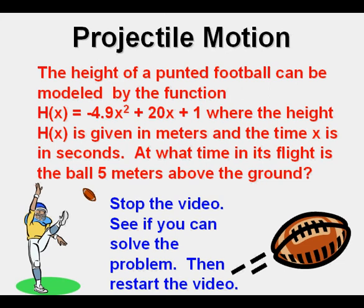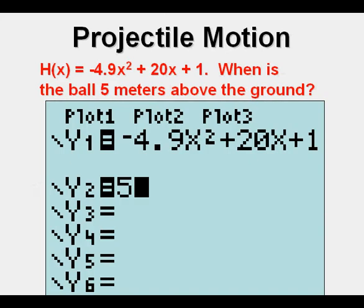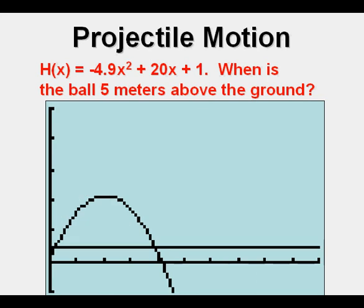OK, we can enter the first function in Y1 and the second one, just 5 meters, in Y2. We can graph them. Now we don't have an optimal look here, but we can see it well enough. We can find the intersection point at x equals 3.9 seconds.